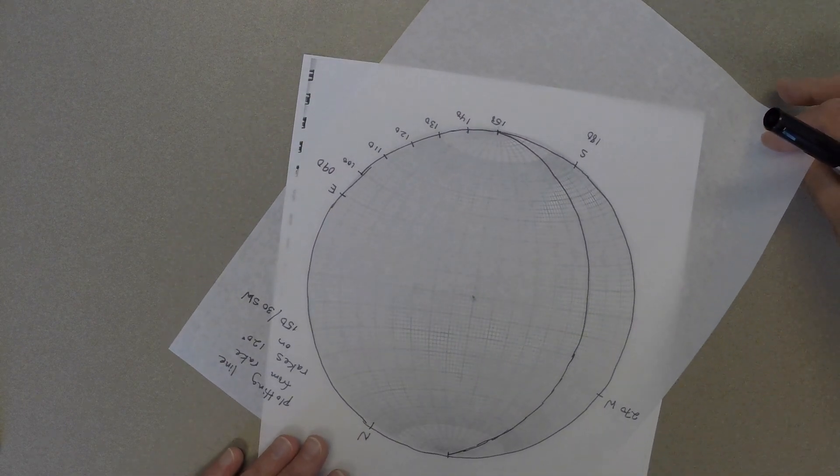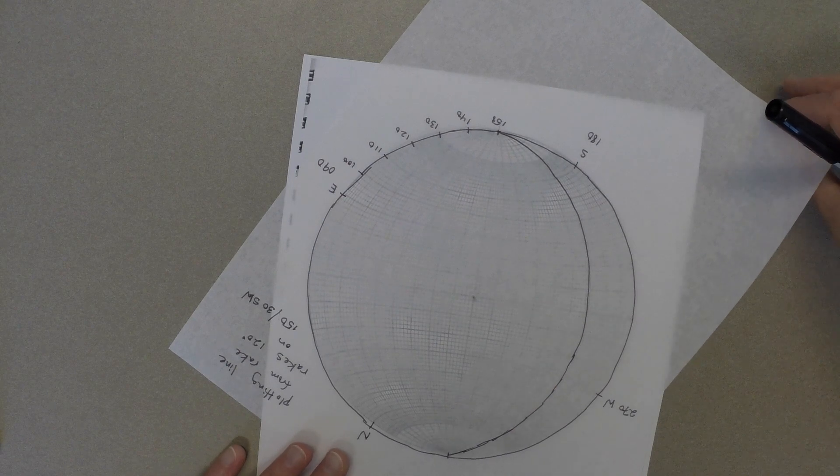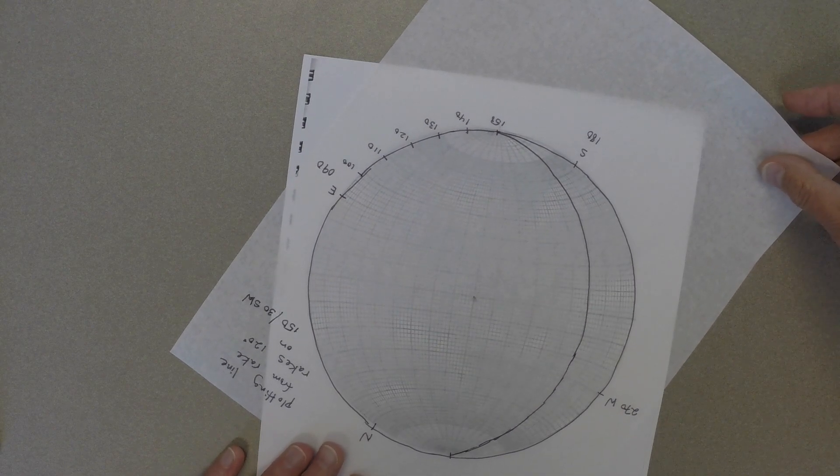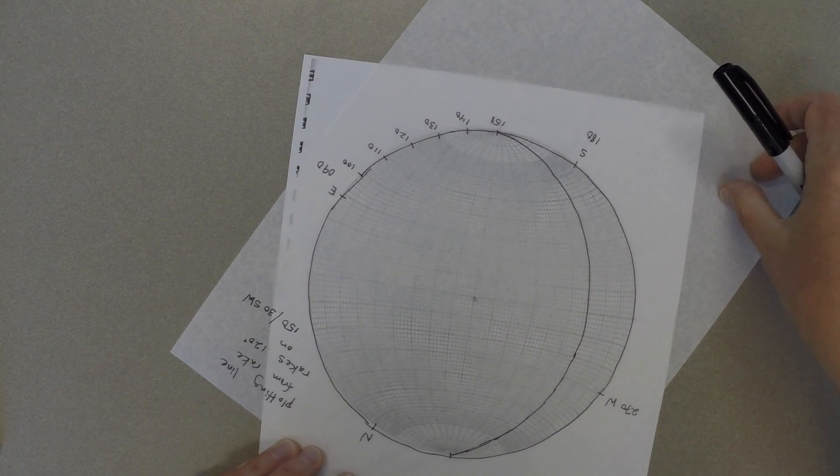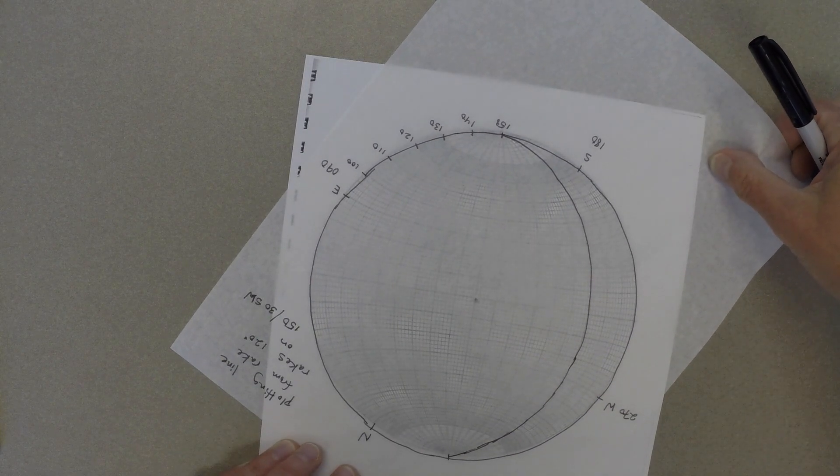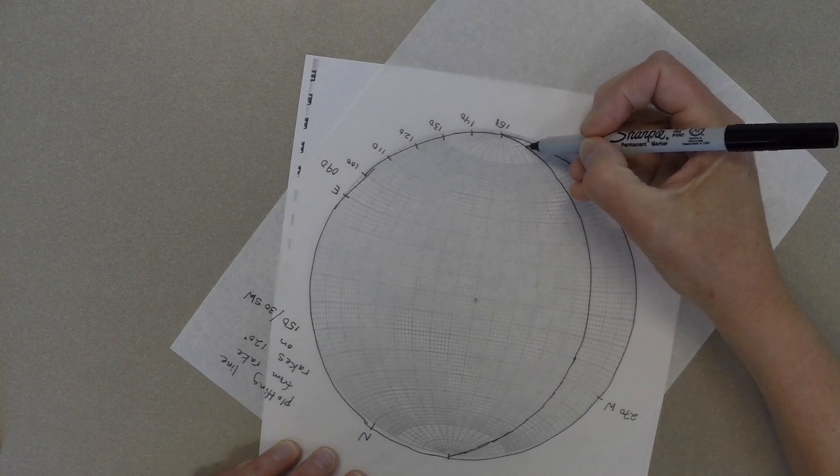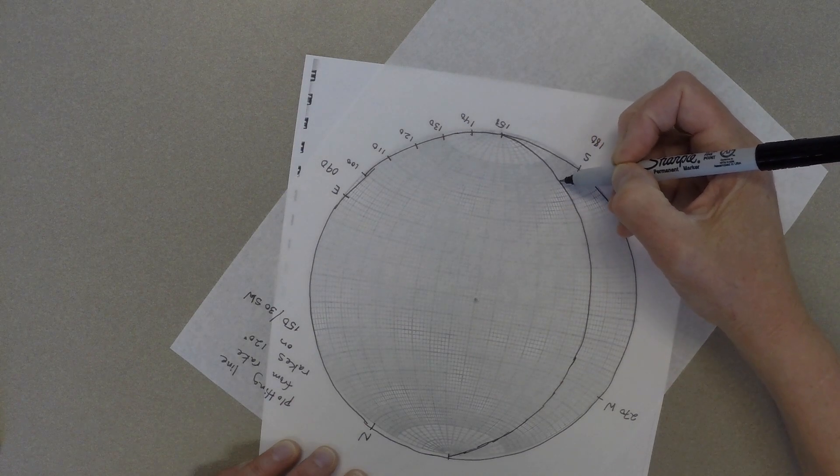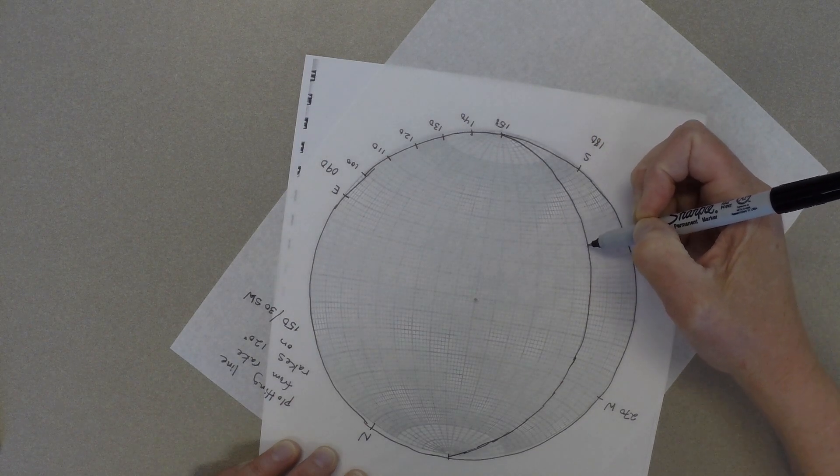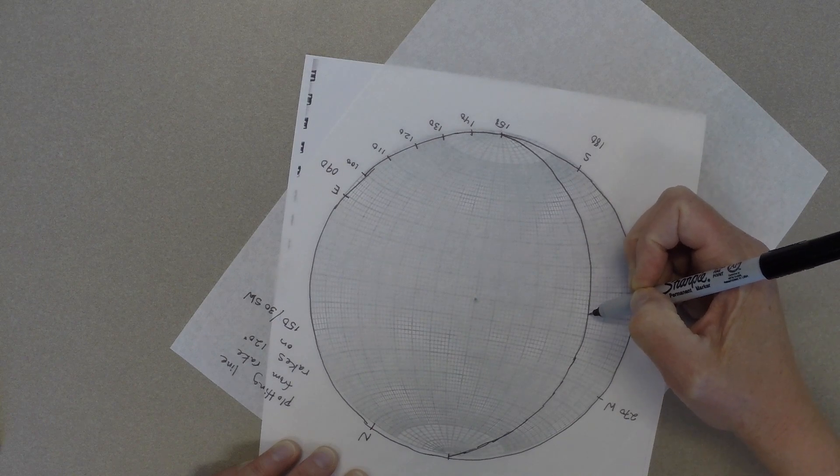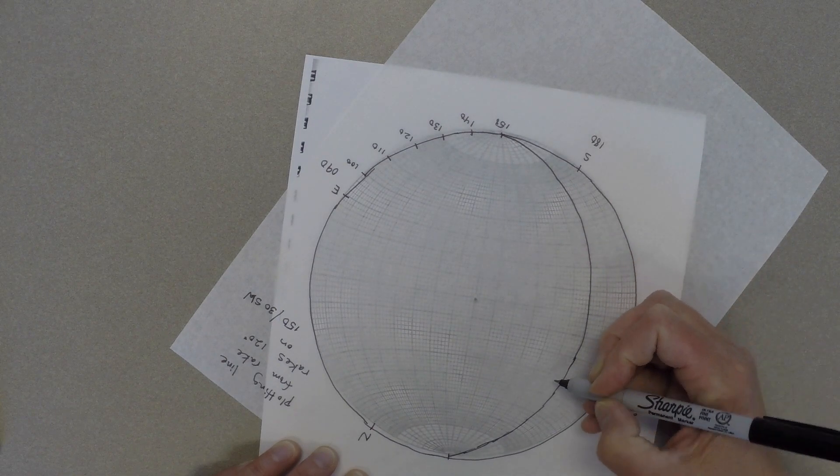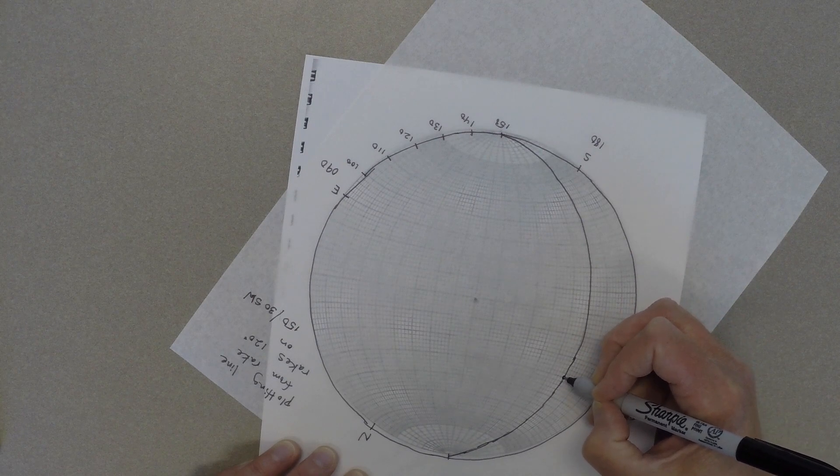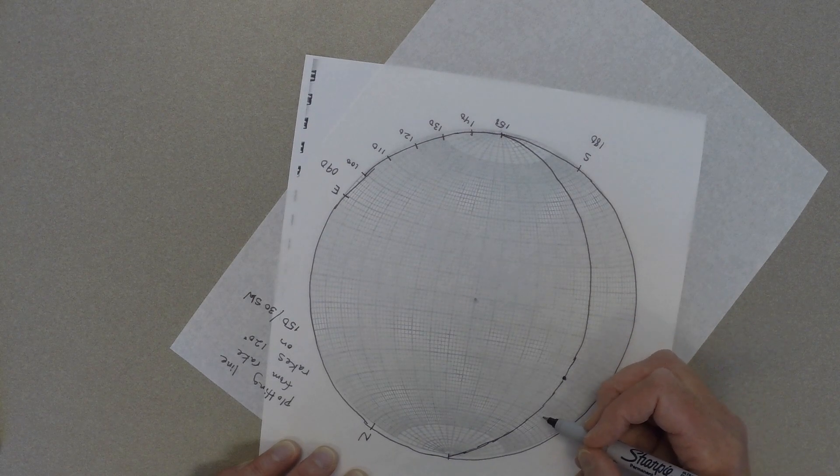Then to plot the rake, we spin the tracing paper again so that that great circle lines up with a great circle on the stereonet, so that the strike line is lined up with north and south. And then we're going to start at the strike and count 120 degrees along that great circle and make a dot. And that dot represents our line.